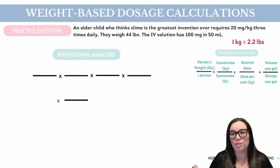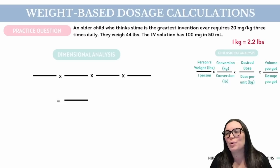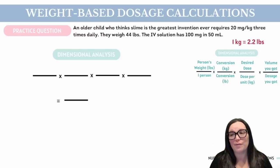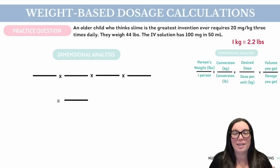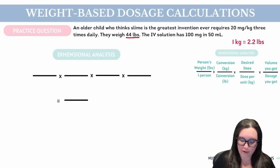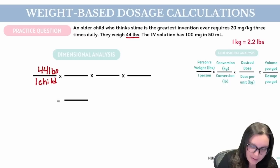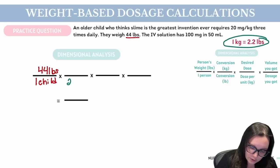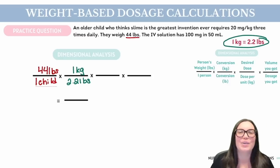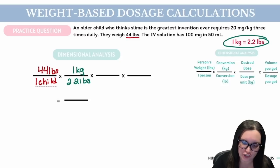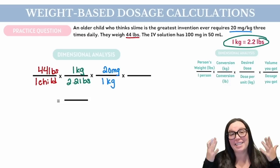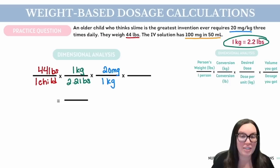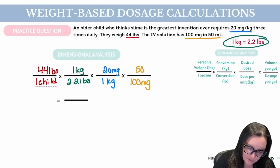Our next practice question states: an older child who thinks slime is the greatest invention ever requires 20 milligrams per kilogram three times a day. They weigh 44 pounds and the IV solution has 100 milligrams in 50 mLs. We start with what we know — one child weighing 44 pounds on the top, child on the bottom. Next, our conversion: 2.2 pounds on the bottom, one kilogram on the top. Then the desired dose: one kilogram on the bottom, 20 milligrams on the top. And what it's available in: 100 milligrams on the bottom, 50 mLs on the top.